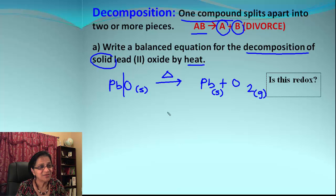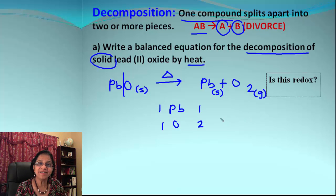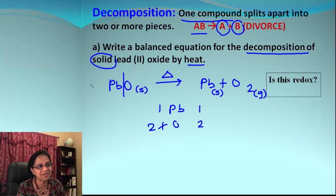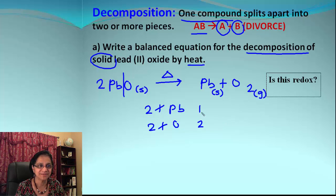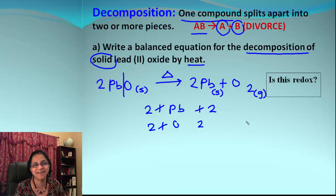To balance the equation, we have Pb and O as the two elements. We need to match the number of atoms on both sides. When we make the number of oxygen atoms two on the product side, we go back and put a coefficient of 2 for PbO. That gives lead two atoms on the reactant side, so we put a coefficient of 2 for Pb on the product side. The balanced reaction is: 2PbO → 2Pb + O₂.